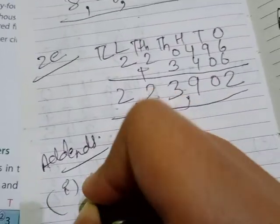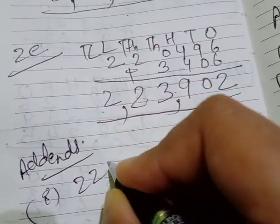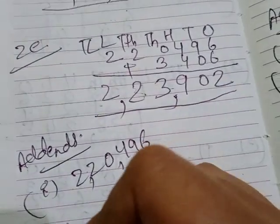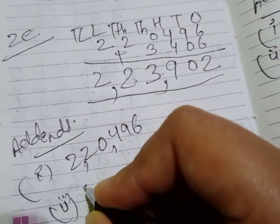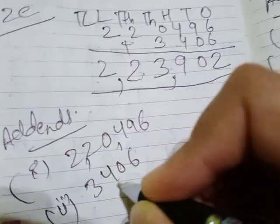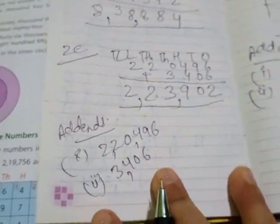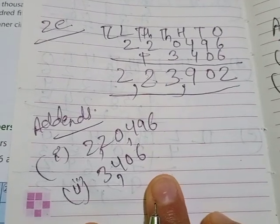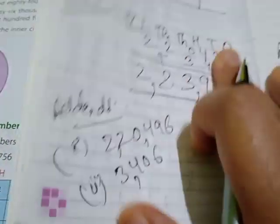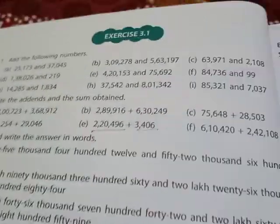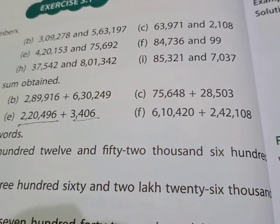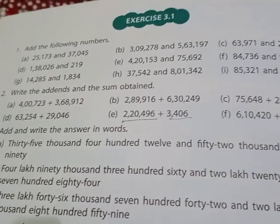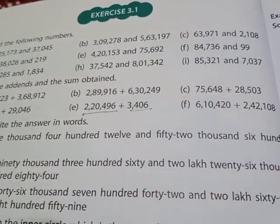The first addend is the first number given, which is two lakh twenty thousand four hundred and ninety-six, and the second addend is three thousand four hundred and six. This is how we write the addends and find the sum. The remaining questions — 2f and all — you have to complete on your own.